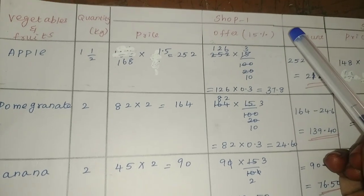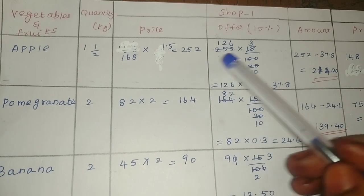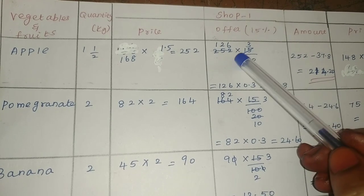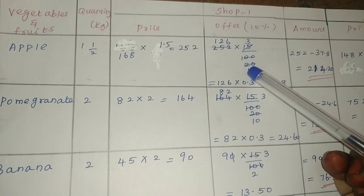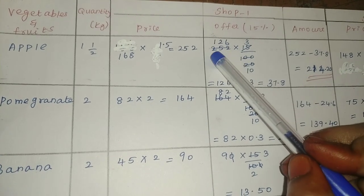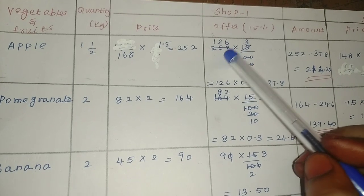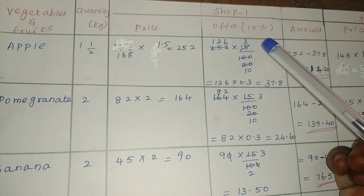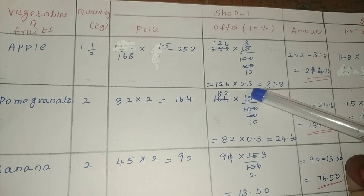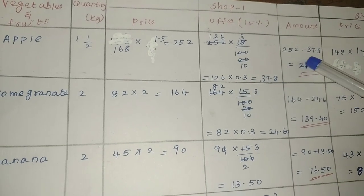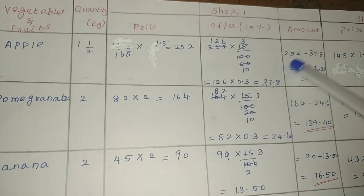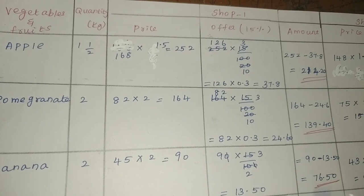Shop 1 has a 15% offer. The price is ₹252. So 252 into 15 by 100 — solving this gives 126 into 3 divided by 10, which is 37.8. Actual price ₹252 minus offer price ₹37.8 equals ₹214.20. That is the shop 1 amount.